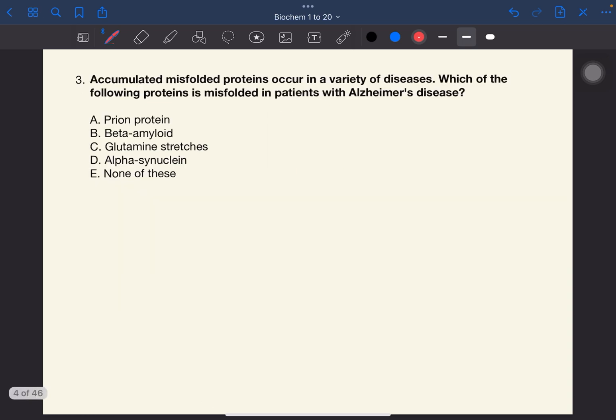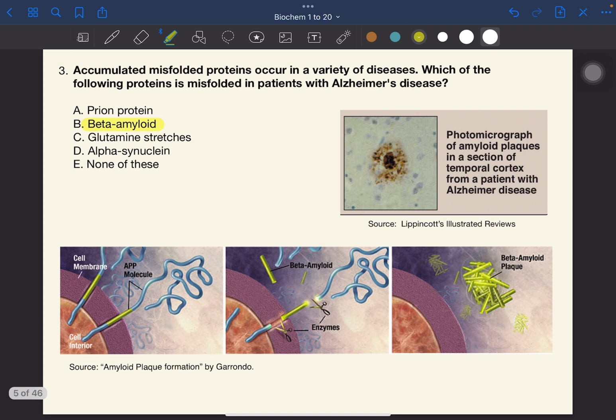Number three. Accumulated misfolded proteins occur in a variety of diseases. Which of the following proteins is misfolded in patients with Alzheimer's disease? The answer to this one is B, beta-amyloid. As you can see here, this is a photo of an amyloid plaque from a patient with Alzheimer's disease.